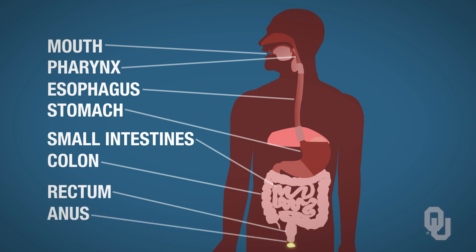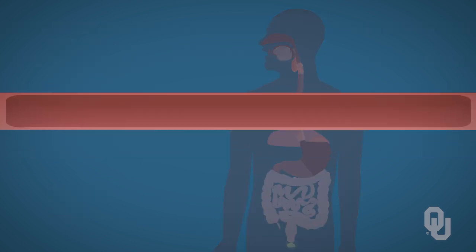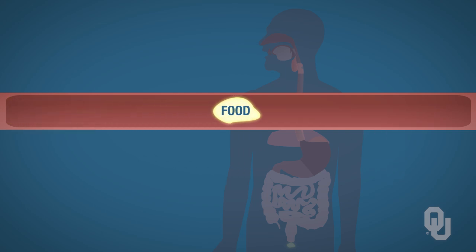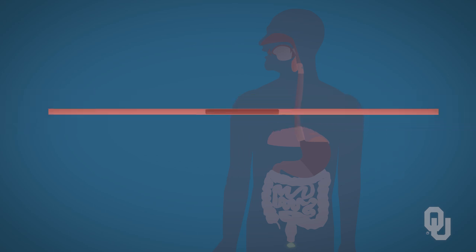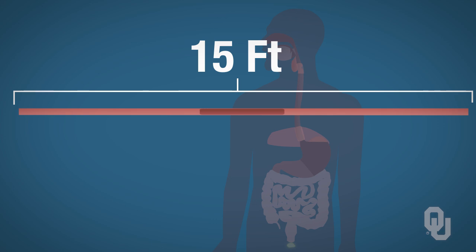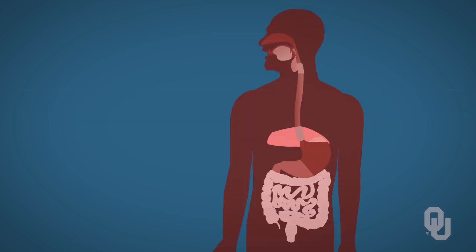These major organs form a hollow tube — the tube through which food passes. If you put the length of this together, it's approximately 15 feet long. So let's begin by going through the structures of the GI system.